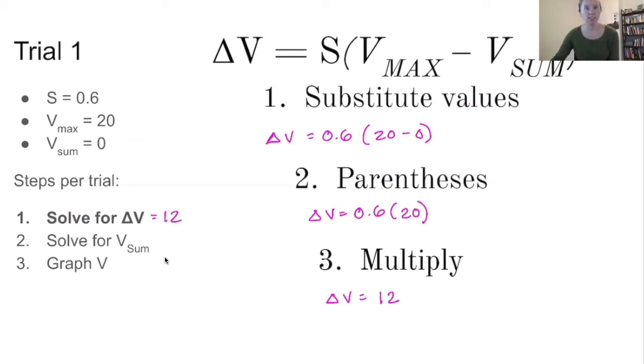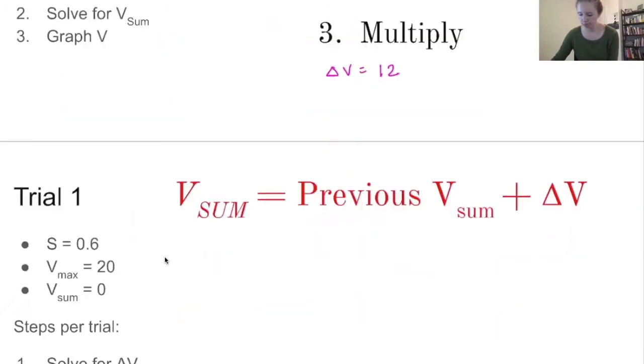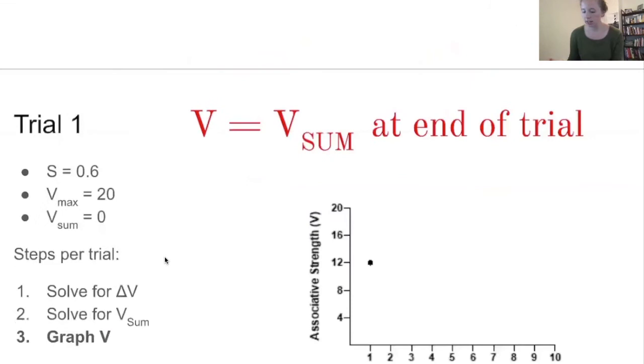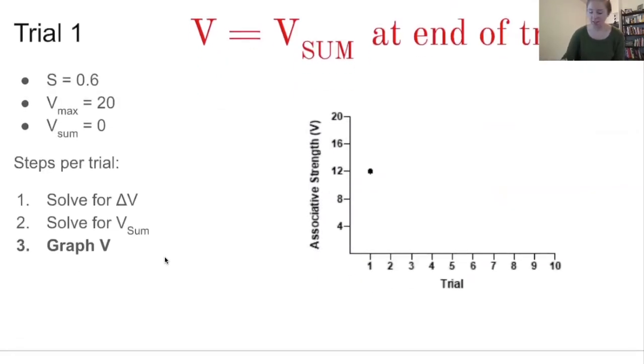So we're going to move on to that next step, which is to solve for V sum. Remember that our V sum at the start of this trial was 0. So when we're calculating what our V sum for the end of this trial is, we're going to take that previous value, which was 0, and add the delta V, the change that we just calculated. So 0 plus 12, our new V sum equals 12. So now we have, this is the associative strength at the end of our very first pairing of our conditioned and unconditioned stimulus.